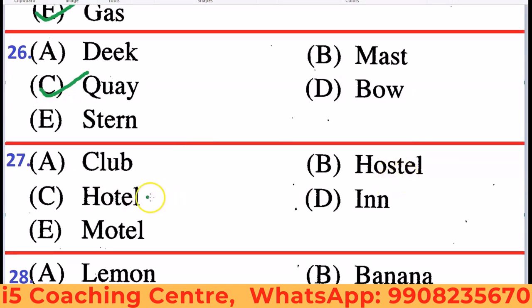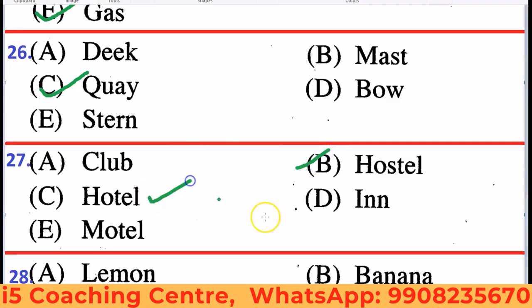Next: Club, Hotel, Inn, Motel. Hotel, Inn, and Motel are all places where people can stay. But Club is a place where people cannot stay overnight. So Club is the odd one out.